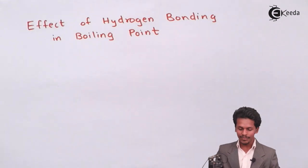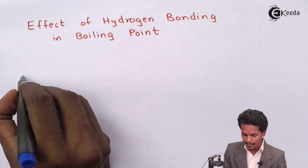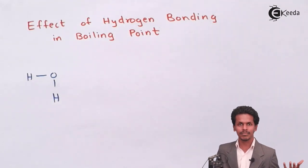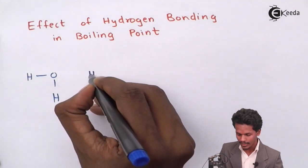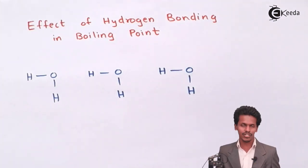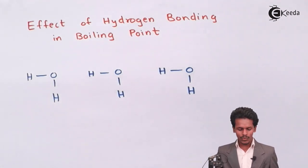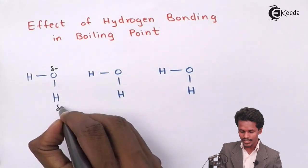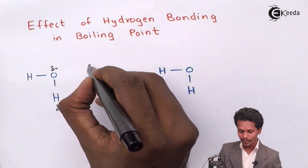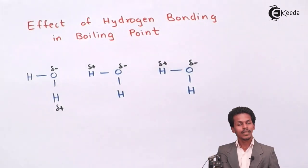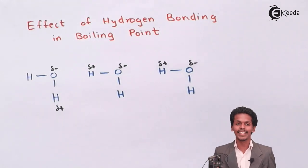Let me explain one by one. When we talk about the water molecule, there are various water molecules present, surrounded by each other, randomly arranged. As we know, oxygen is highly electronegative, so in this H2O molecule, the oxygen will have a partially negative charge while hydrogen will have a partially positive charge. Similarly, in the next molecule, hydrogen will be partially positive and oxygen will be partially negative.